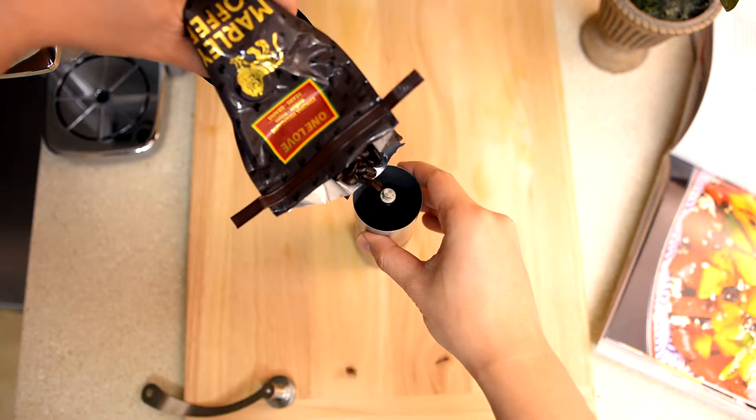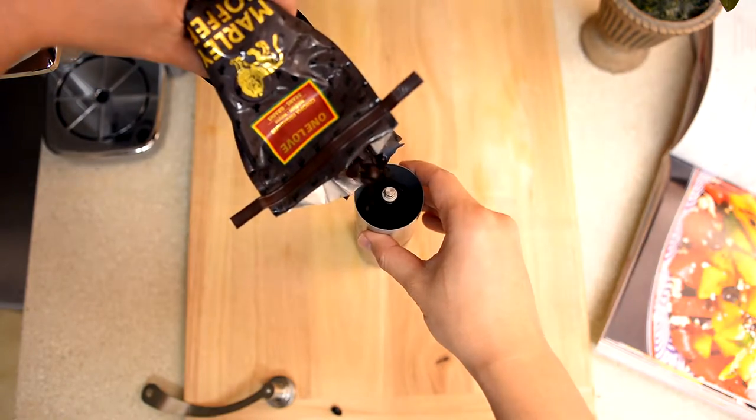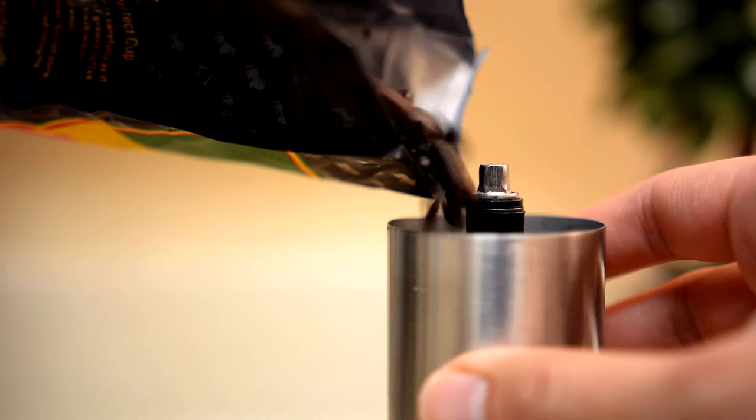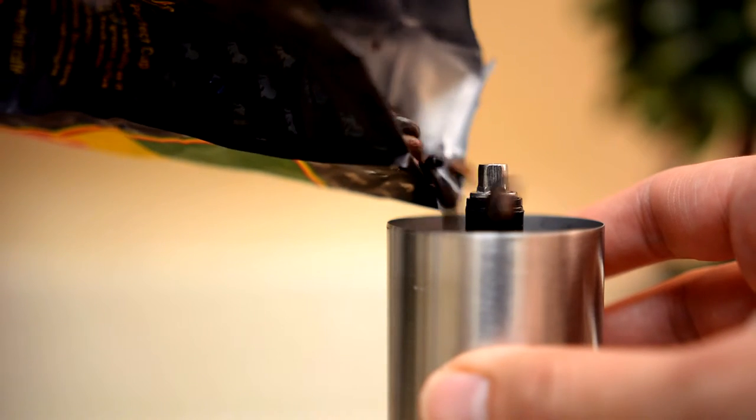Step 2, open the top lid and add your coffee beans to the grinder. For this example, we will use 19 grams for our French press.